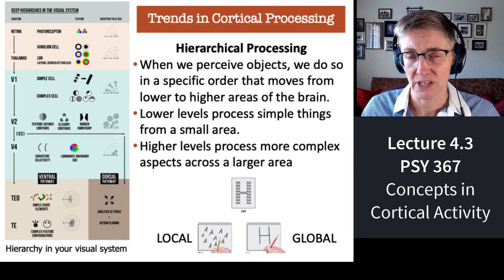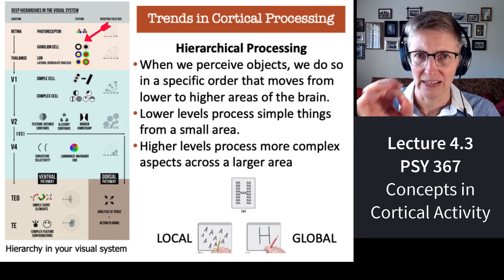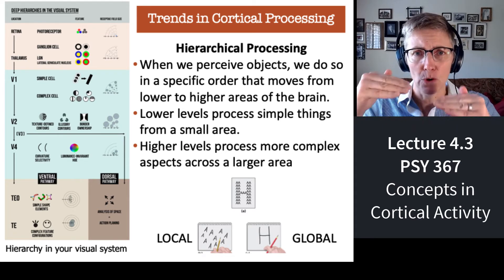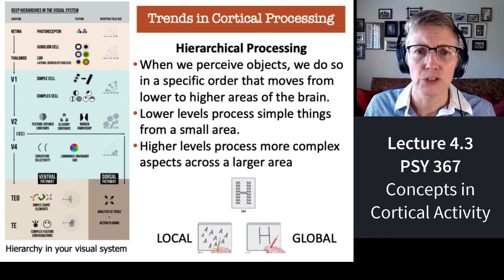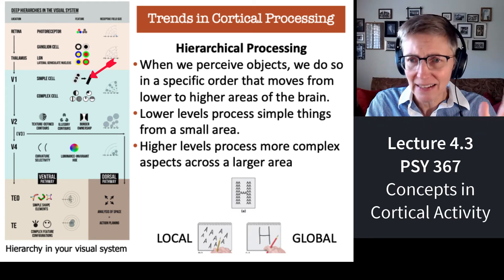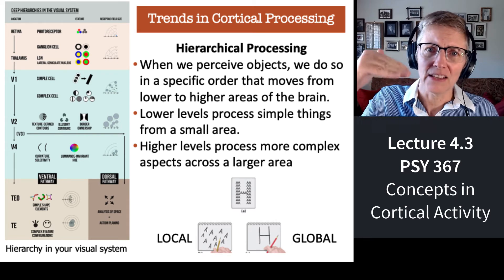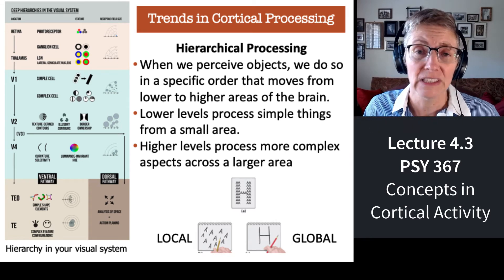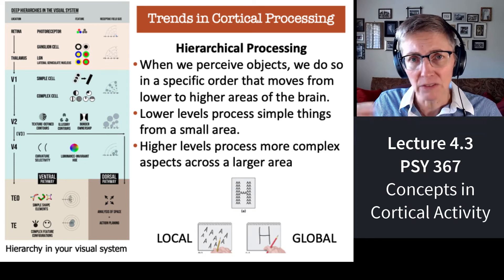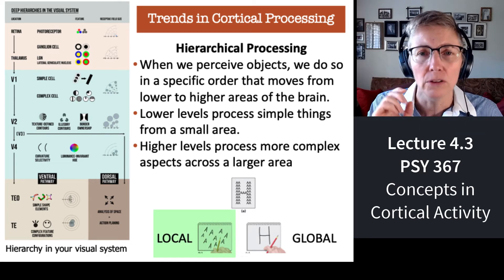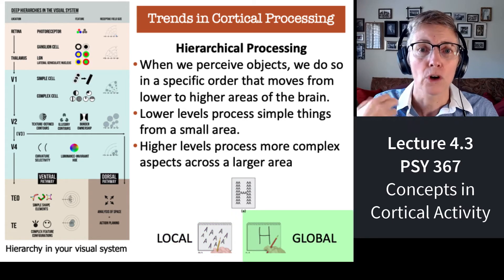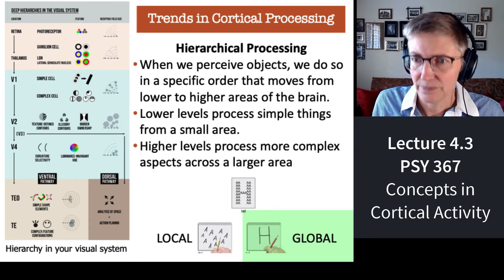Let's take the visual cortex — the part of your brain that analyzes the visual system. At the beginning, what the visual cortex seems to care about are small dots of light, just where there is a light. Then color gets added in. Then, as you go up the hierarchy to later and later stages of visual processing, edges are detected, then corners and line endings. The processing gets more and more complicated as you go to later stages — at the bottom level, processing is detail-oriented, very small and local. As you go up the hierarchy, neurons do more global or holistic processing. That's hierarchical processing.